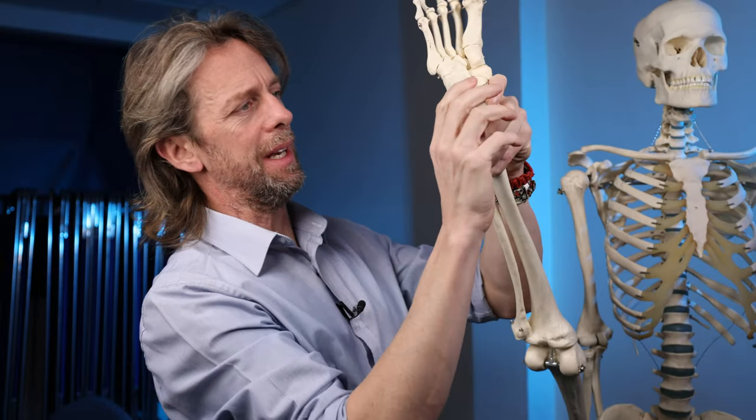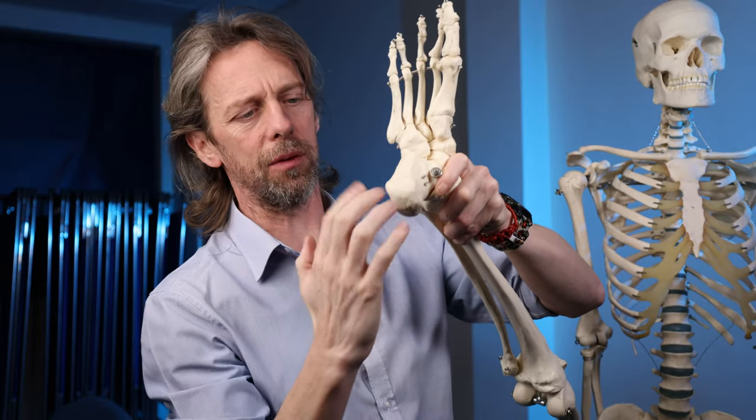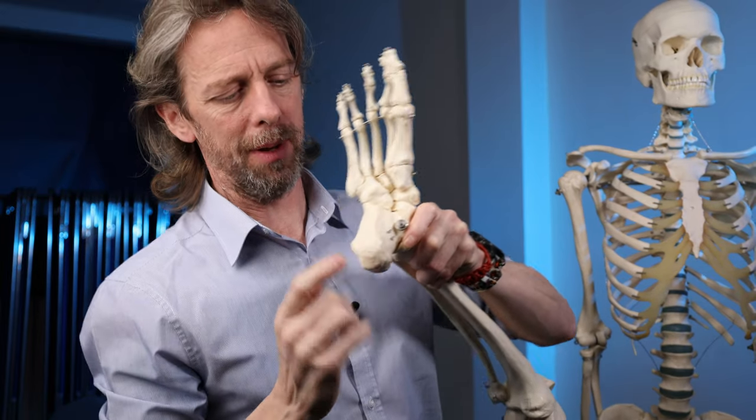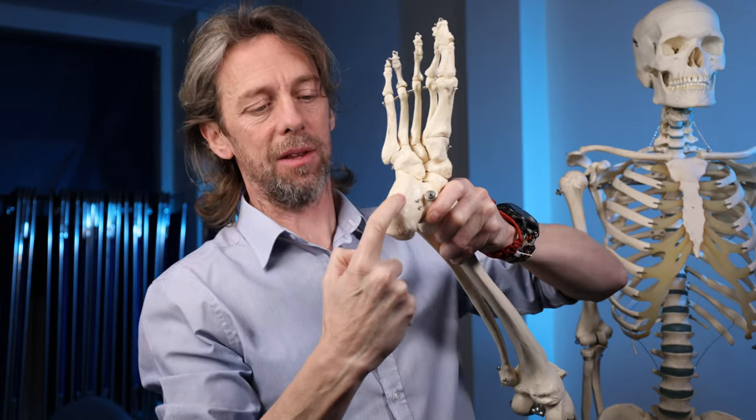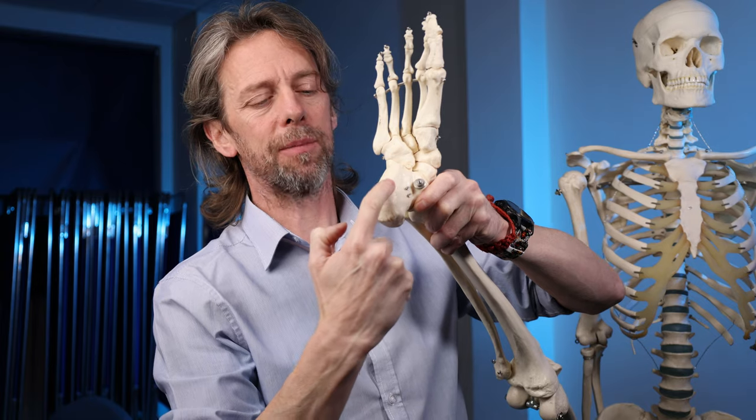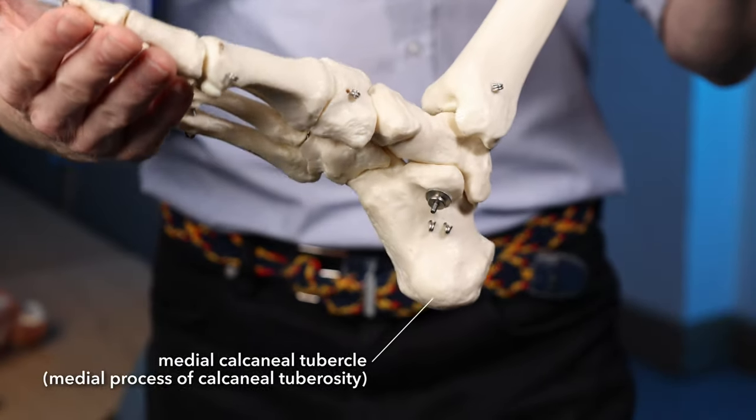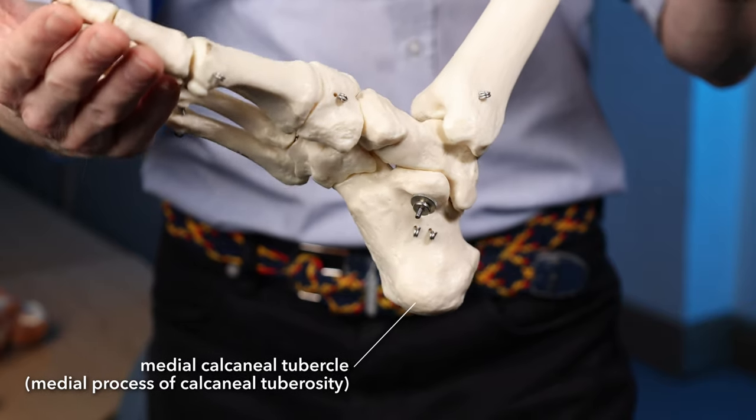And on this side here, so there's the plantar surface of the foot, we can see a couple of lumpy bits. This is the medial—there's the big toe there—this is the medial calcaneal tubercle and that's where the plantar aponeurosis is going to run from.